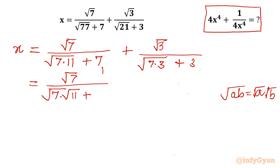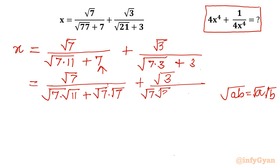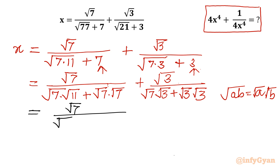So we rewrite: square root 7 over square root 7 times square root 11, plus square root 7 times square root 7, plus square root 3 over square root 7 times square root 3, plus square root 3 times square root 3. Now we can divide numerator and denominator by the common factor. So we can write it as square root 7 over square root 7 times (square root 11 plus square root 7).